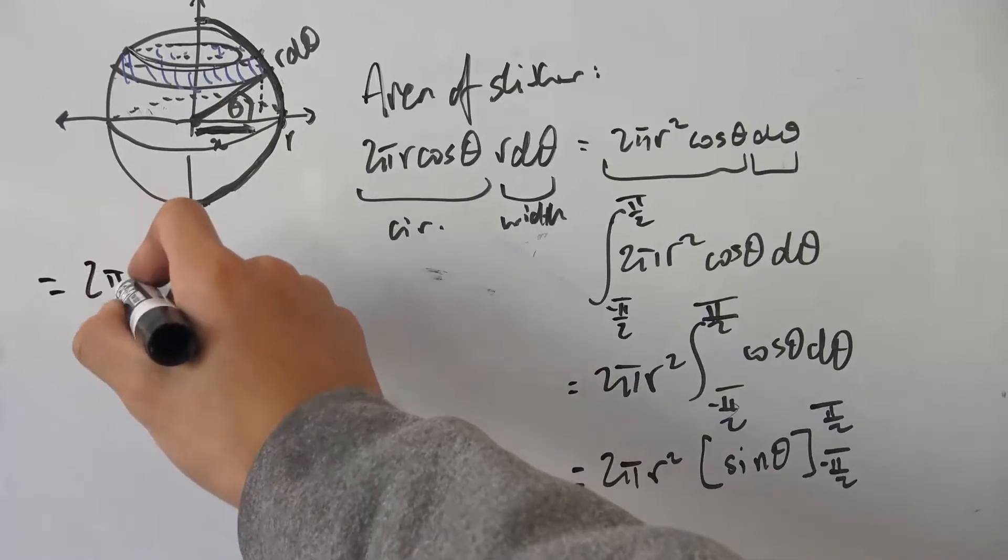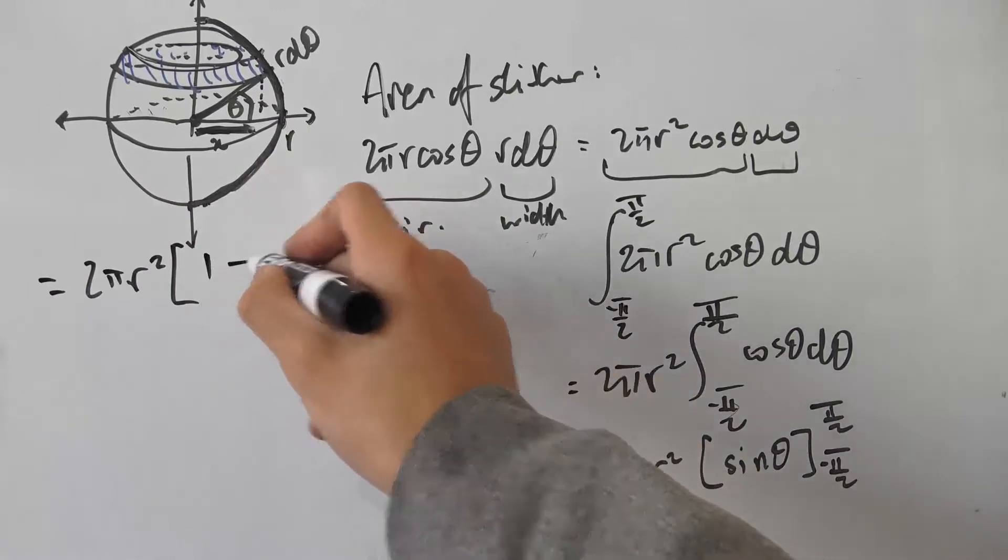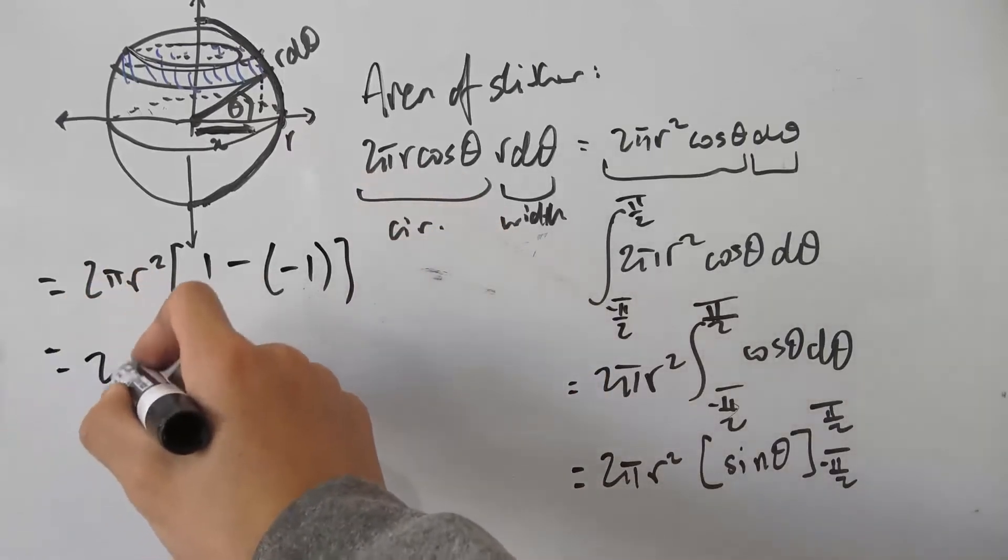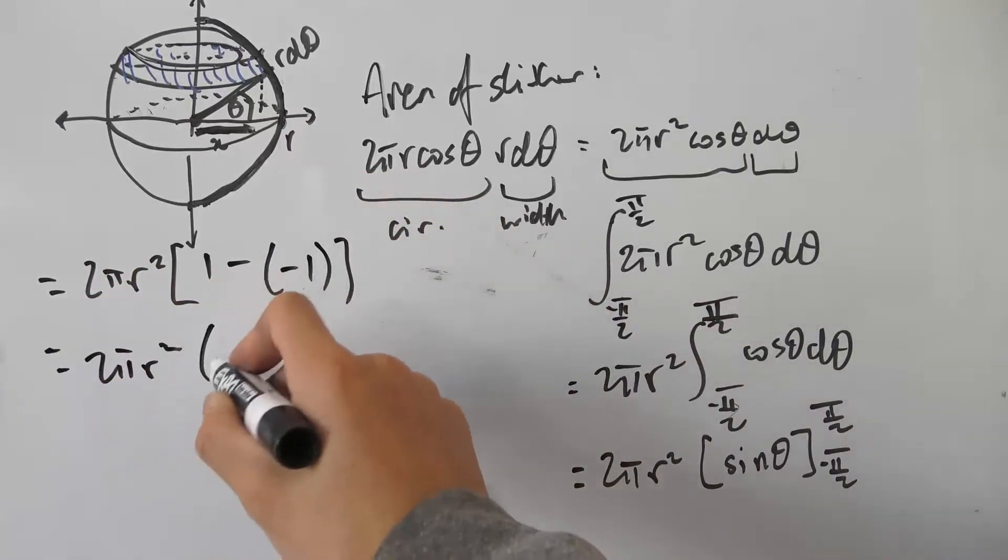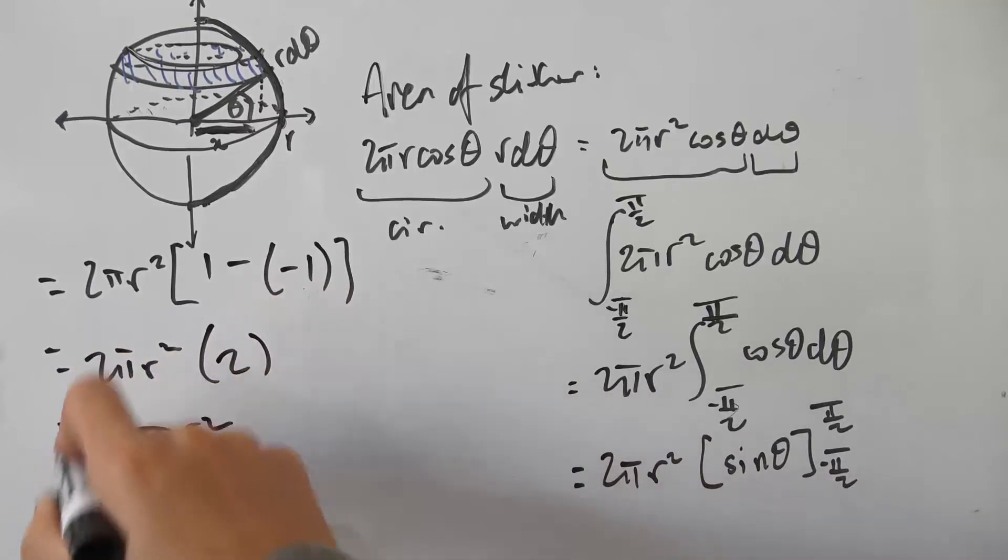In the end, we have 2πr². Sin(π/2) is just 1, and sin(-π/2) is negative 1, and we're subtracting the lower bound. So in the end, 2πr² multiplied by 2 gives us 4πr² as expected.